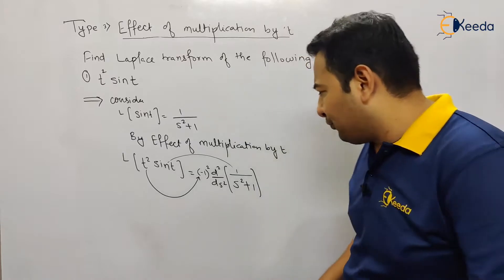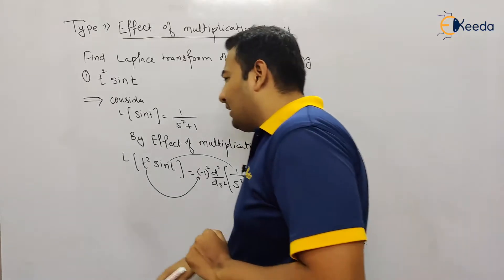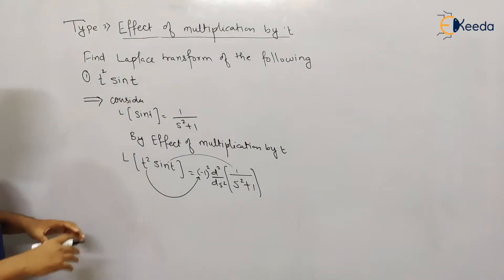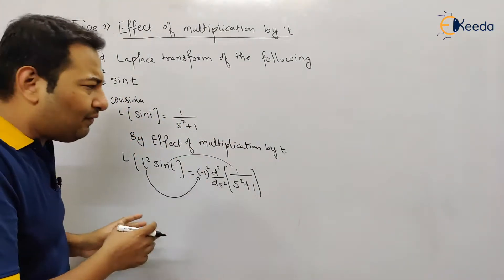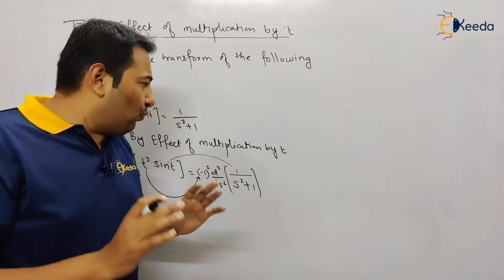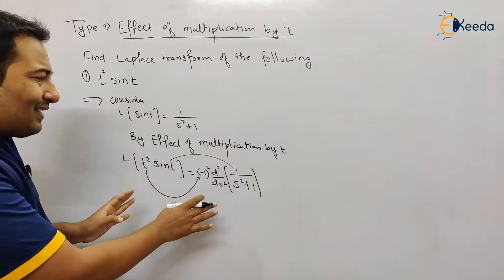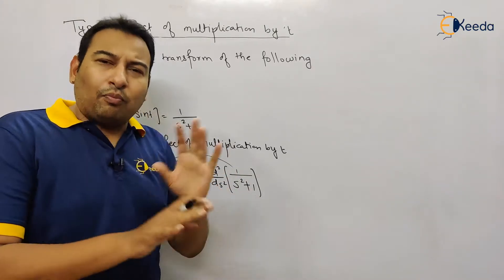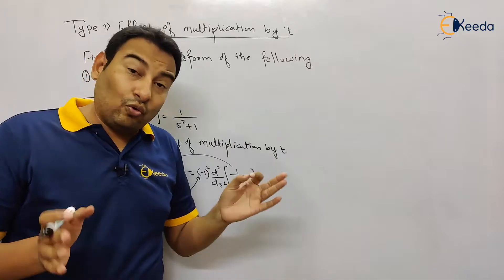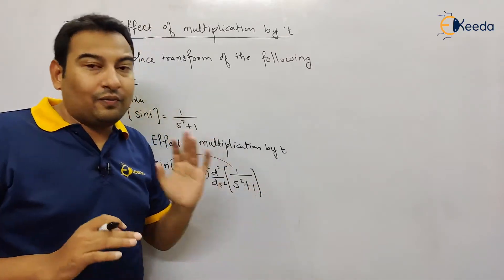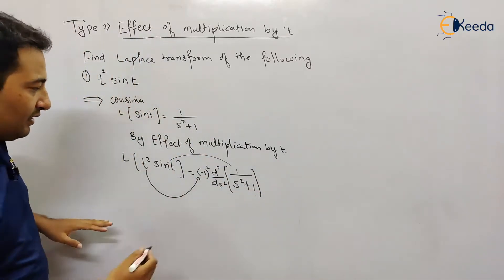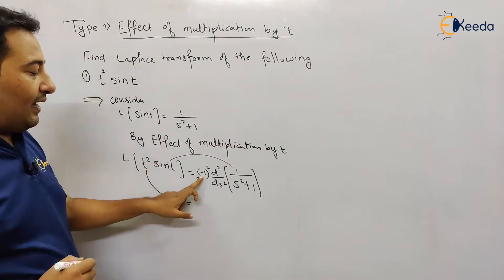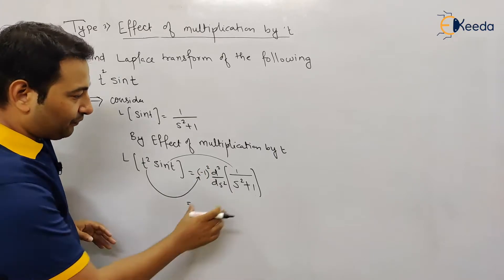Every property has a different effect — this is the effect of multiplication by t. Now if you know the derivative, the work after applying Laplace is done. If you know the derivative your problem is solved. Minus 1 squared is 1.